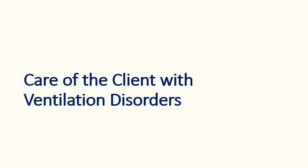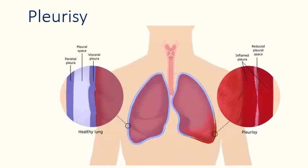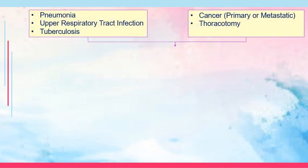Let's go to the care of the client with ventilation disorders. The first is pleurisy, also called pleuritis. As the term implies, there is inflammation on both layers of the pleura — the visceral and parietal pleura. The visceral pleura is close to the lungs, whereas the parietal pleura is on the outer surface.